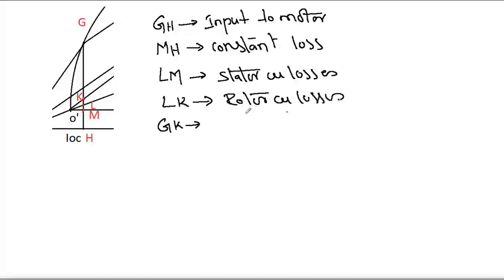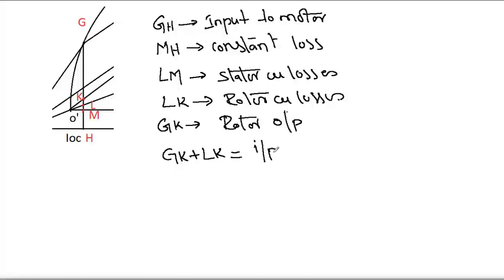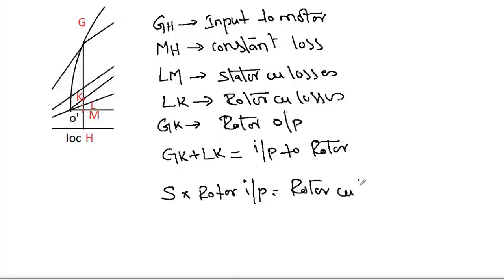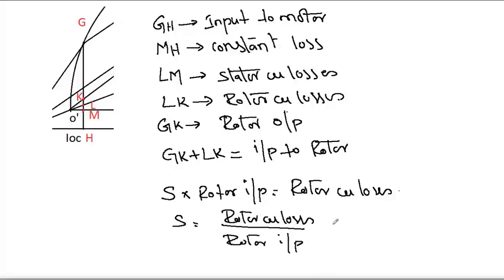GK represents the rotor output. If we add GK and LK — rotor output plus rotor copper loss — we get the input to the rotor. We know the standard formula: slip × rotor input = rotor copper losses. Therefore, slip S = rotor copper loss divided by rotor input, which is LK divided by GL.